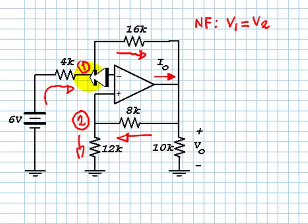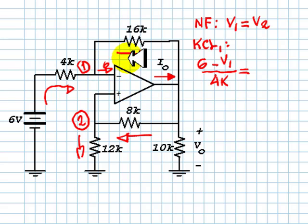KCL for node 1. Currents that go in: 6 minus V1 over 4 kilos. That is equal to this current, which is zero because this is an ideal op-amp, plus the one on the top, V1 minus this, which is no other than V0, the voltage of this node, divided by 16 kilos.